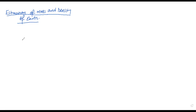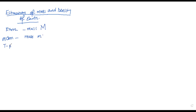Among the bodies, the earth controls the moon. So if you consider the earth of mass capital M, and then consider a moon of mass small m, then if you know the period — the period of the moon around the earth is approximately 27.6 days — then the radius of the moon from the earth is equal to 3.8 times 10 to the power 8 meters.